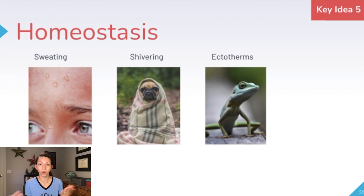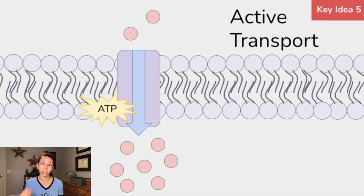Active transport is one main way we use ATP within the cell — we can get molecules into the cell that we need by using the chemical energy within ATP in our transport proteins.